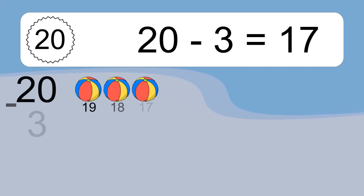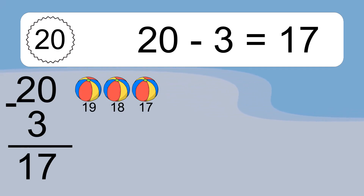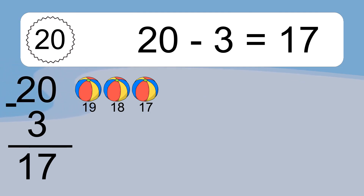20 minus 3 equals what? 20 minus 3 equals 17. Let's count it. 19, 18, 17.